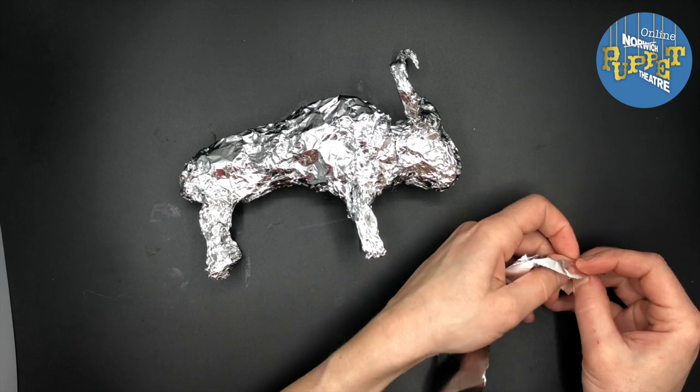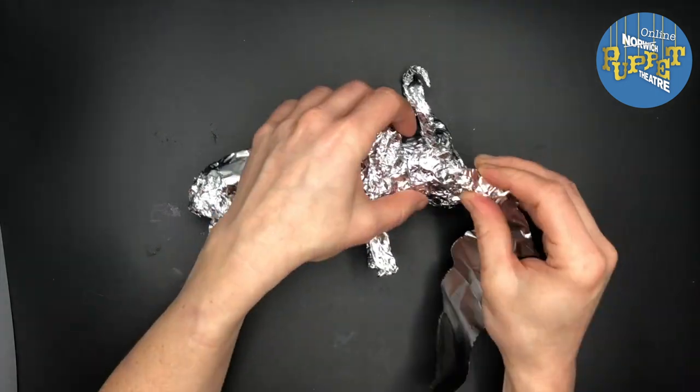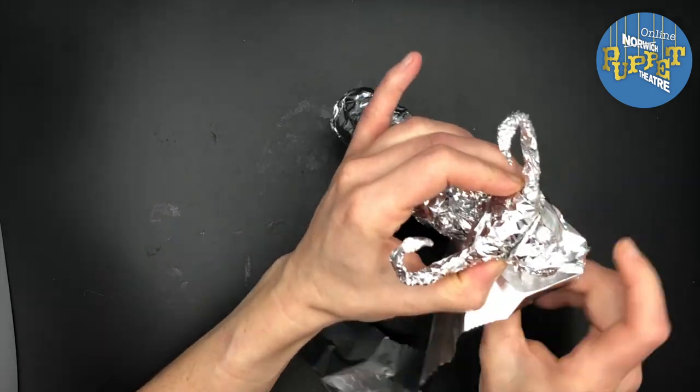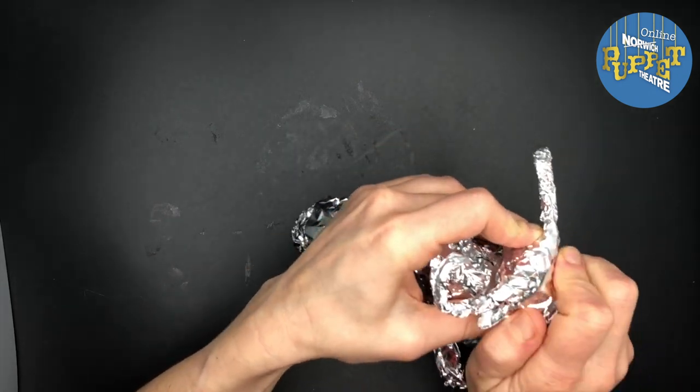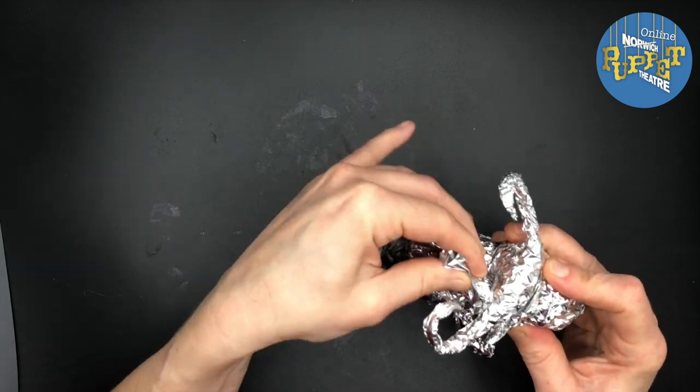So now I'm going to make some ears by taking another strip of foil, molding my kind of ear shape at one end, putting that into position and then wrapping the foil around my puppet's head and around the body to make sure it's really well attached. I'll do this again with the ear on the other side.